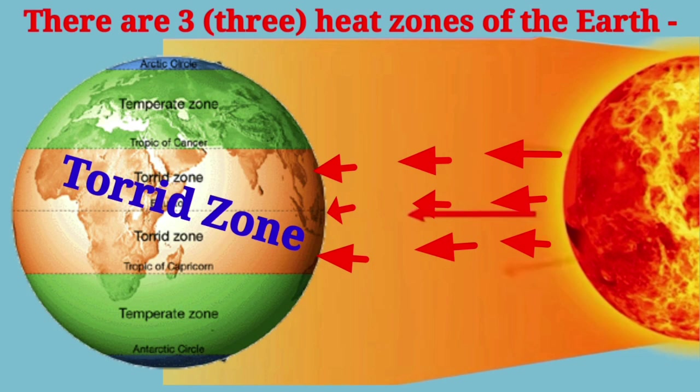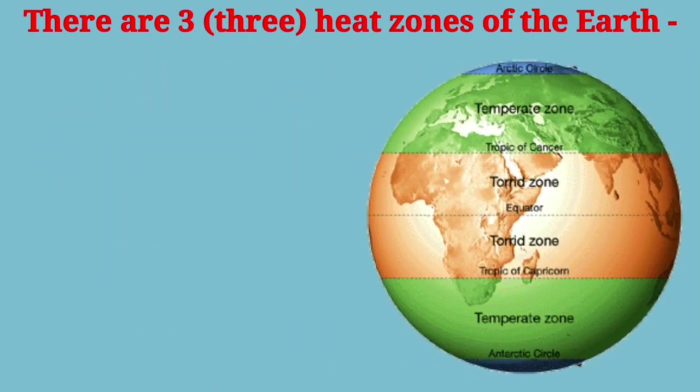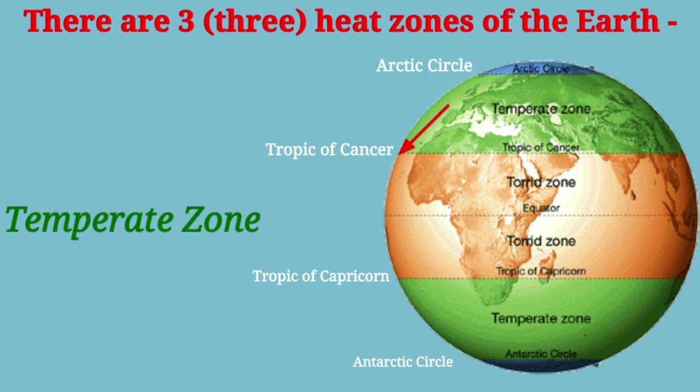This zone receives maximum heat from the sun. The region between the Tropic of Cancer and the Arctic Circle or between the Tropic of Capricorn and Antarctic Circle is called Temperate Zone.